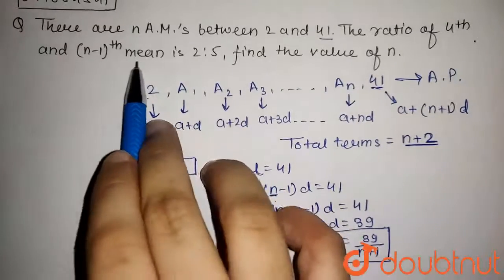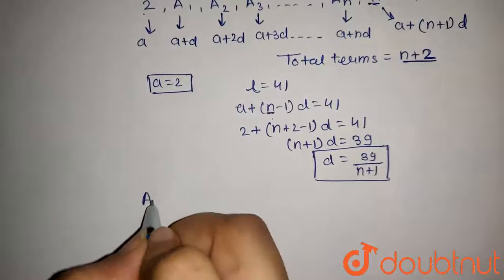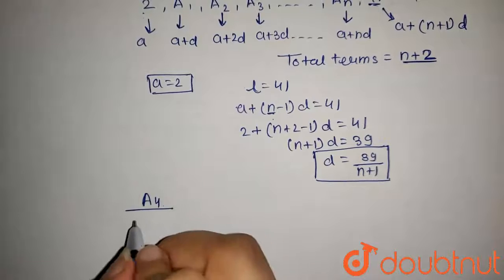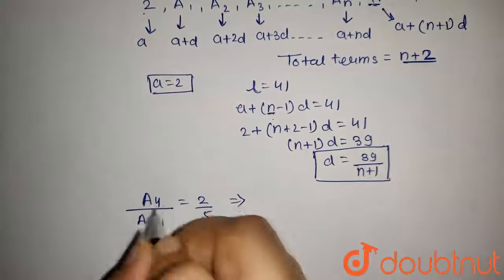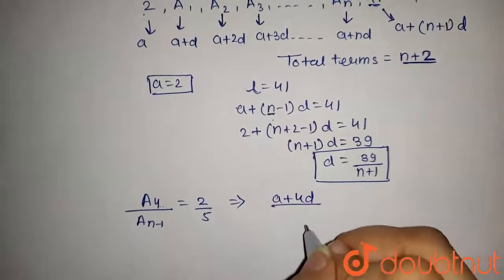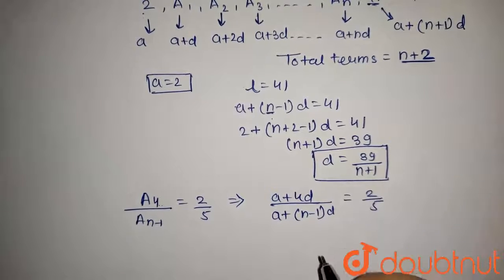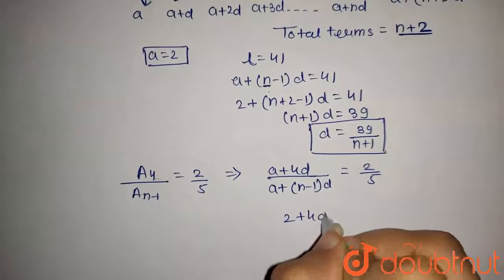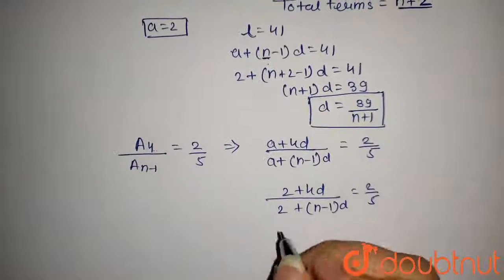We are given that the ratio of the 4th mean to the (n minus 1)th mean is 2 to 5. So a4 upon a(n-1) equals 2 by 5. Now a4 equals a plus 4d and a(n-1) equals a plus (n minus 1)d. Substituting a equals 2, we get (2 plus 4d) upon (2 plus (n minus 1)d) equals 2 by 5.